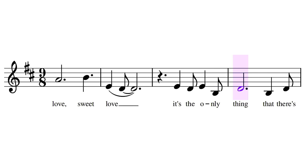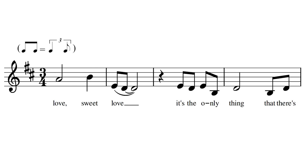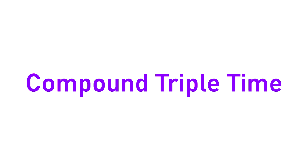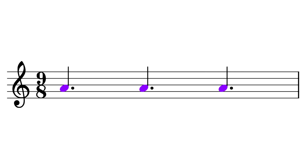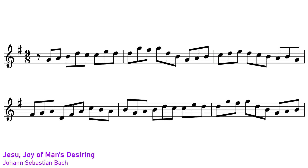In practice, songs with a jazz waltz feel will generally be notated in 3/4 time with an instruction to swing the rhythm, as they're easier to read this way and also allow the performer more freedom over how they swing the rhythm. 9/8 used as compound triple time — three strong beats in the bar dividing down into three eighth notes — is usually only found in classical music.